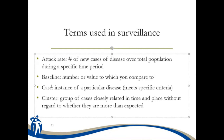A case is an instance of a particular disease that meets specific criteria — this is important because an infection has to meet a specific definition. A cluster is a group of cases closely related in time and place, without yet determining whether they are more than expected. You may have a cluster of cases and think it might be an outbreak, but you haven't done the investigation yet to determine whether it's more than expected.